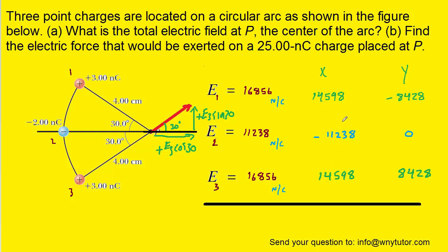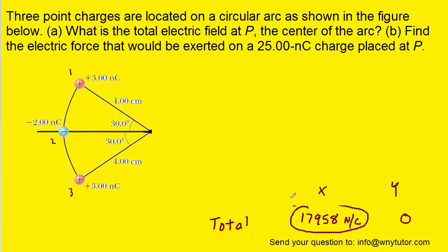And now what we're going to do is we're going to add together all the x components and also all the y components to come up with the components of the total electric field. Notice in the y direction that when we add together the three components, they actually add up to zero. So there will be no y component for the total electric field. But when we add together the x components, we get approximately 17,958. And the unit for electric field again is newtons per coulomb. So in fact, the total electric field can be reported as approximately 1.8 times 10 to the fourth newtons per coulomb.